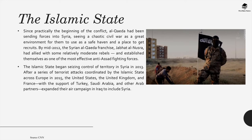Another important actor is the Islamic State. Since practically the beginning of the conflict, Al-Qaeda had been sending forces into Syria, seeing a chaotic civil war as a great environment to use as a safe haven and a place to get recruits. By mid-2012, the Syrian Al-Qaeda franchise Jabhat al-Nusra had allied with some relatively moderate rebels and established themselves as one of the most effective anti-Assad fighting forces. The Islamic State began seizing control of territory in Syria in 2013.